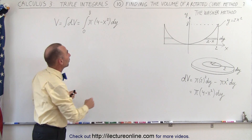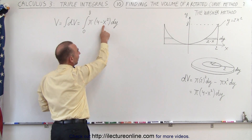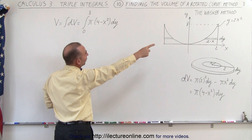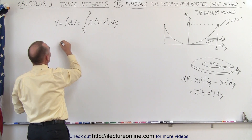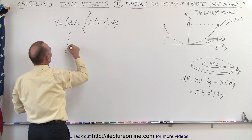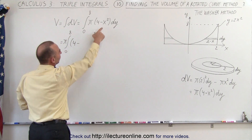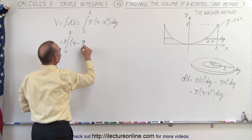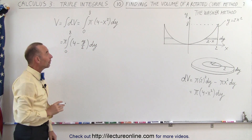Now we still have one more problem: we have an x and a dy, so we have to replace x in terms of y. Since y equals 2x squared, x squared can be replaced by y over 2. So we can write pi times (4 minus y over 2) times dy, and now we're ready to integrate.